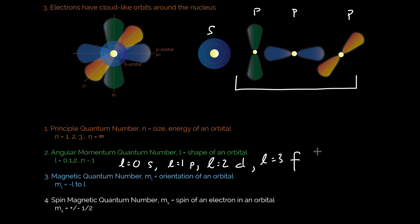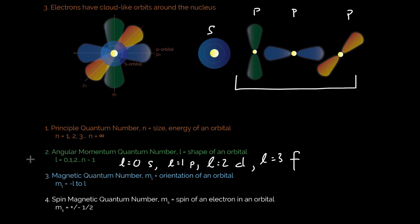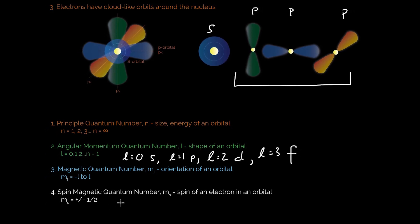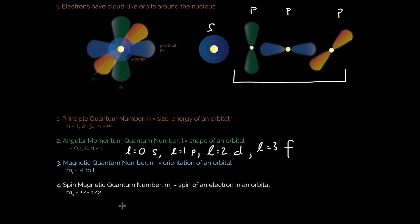Lastly is the spin magnetic quantum number m sub s. And that's going to be the spin of an electron in an orbital. You can fit two electrons in each particular orbital. So what the spin magnetic quantum number is saying is that if you had an orbital, let me just write it out, the 1s orbital, and I wanted to put an electron in there, that would be a positive spin. So if I wanted to put another electron in there, it would have to have a negative one half spin.